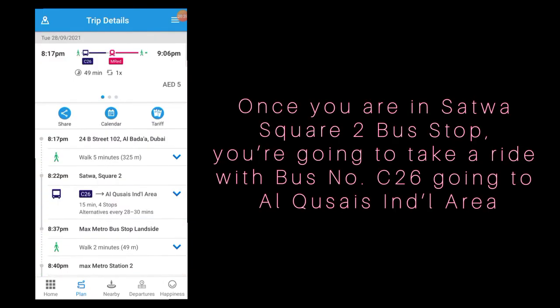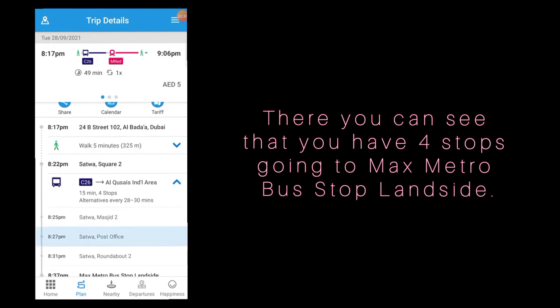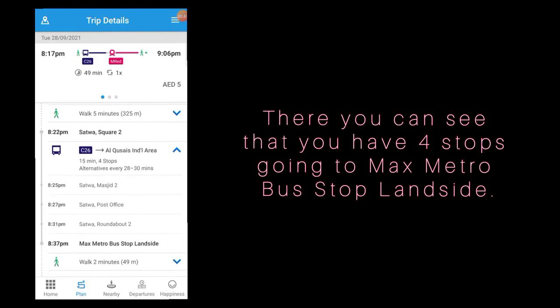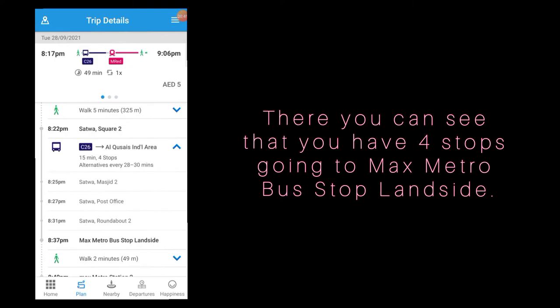Once you are at Satwa Square 2 bus stop, you are going to take bus number C26 going to Al Quoz Industrial Area. You can see that you have 4 stops going to Max Metro bus stop, land side.